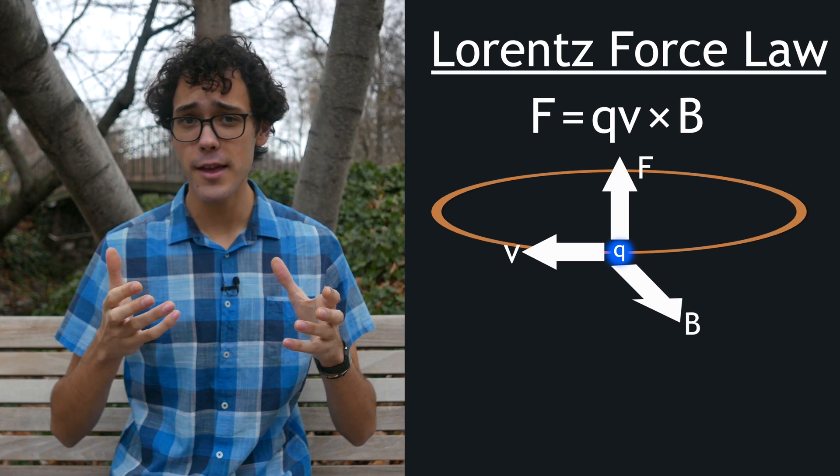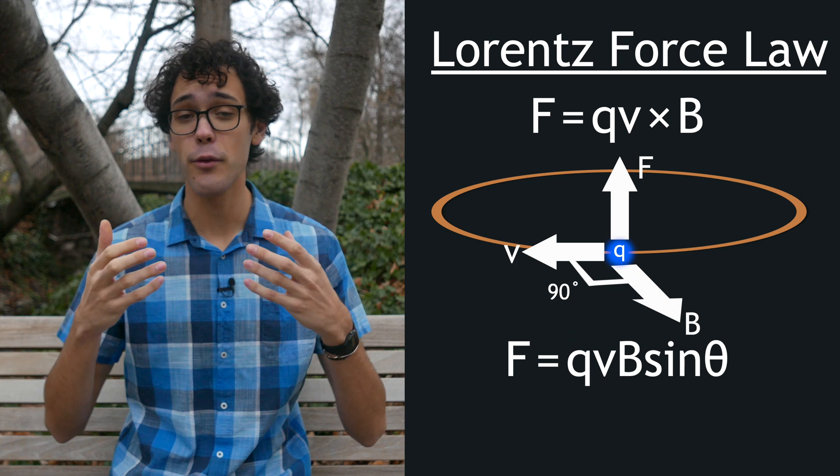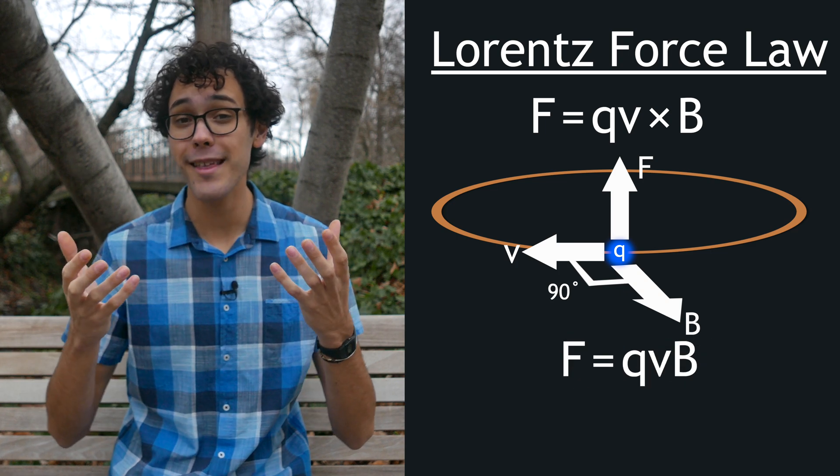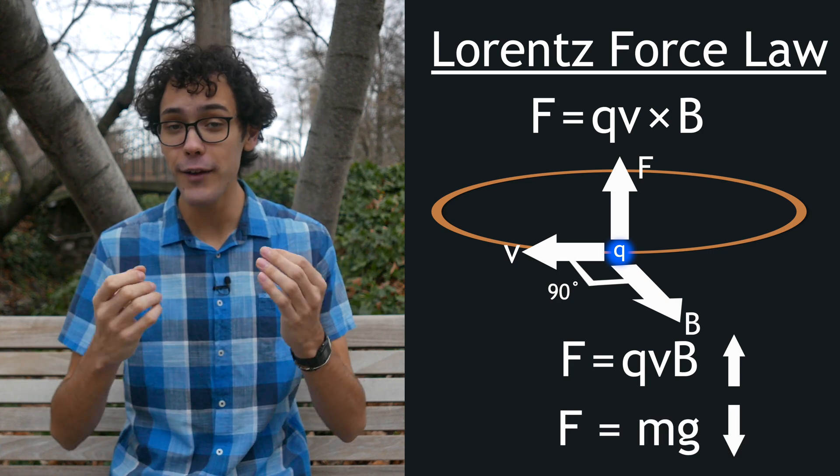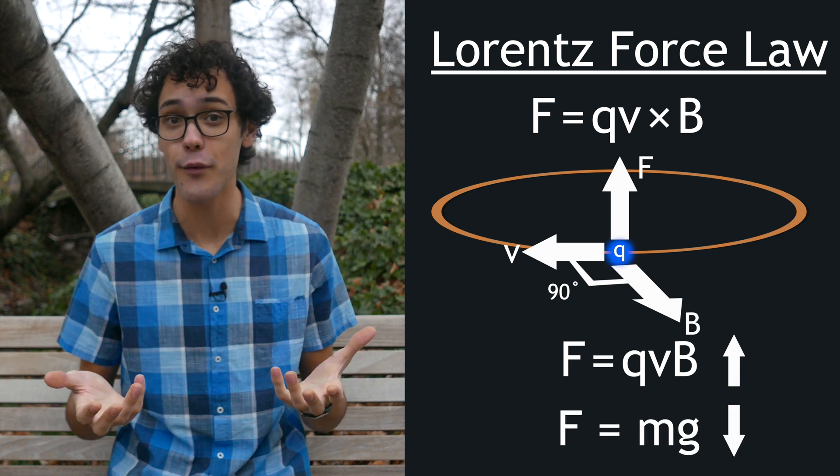Because the flow of current is perpendicular to the magnetic field through the wire, it creates a force with magnitude qvB with upward direction. So the downward force of gravity, mg, perfectly balances the Lorentz force, qvB.